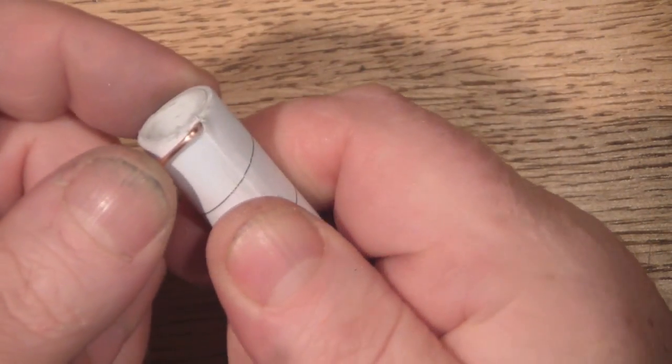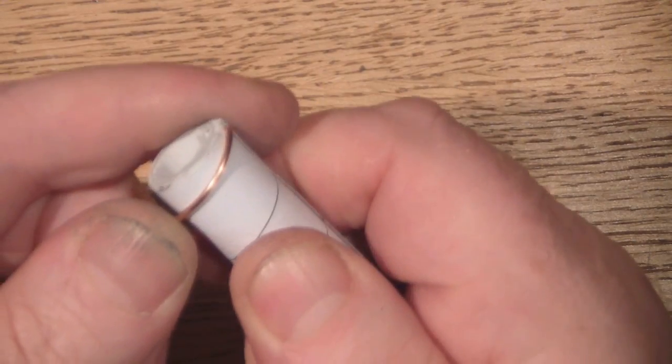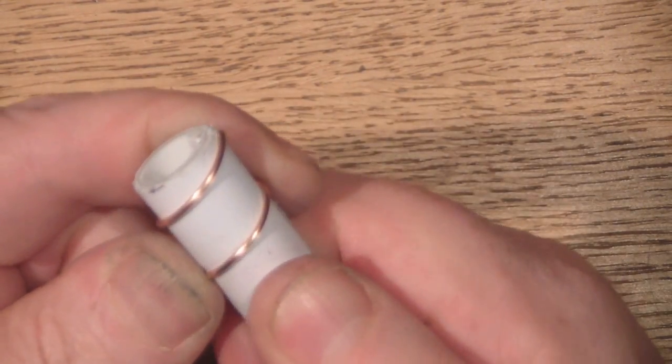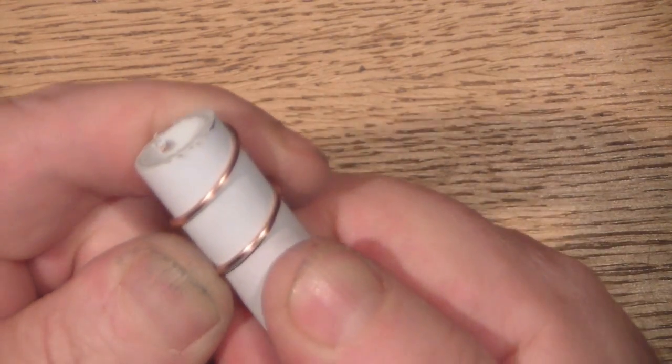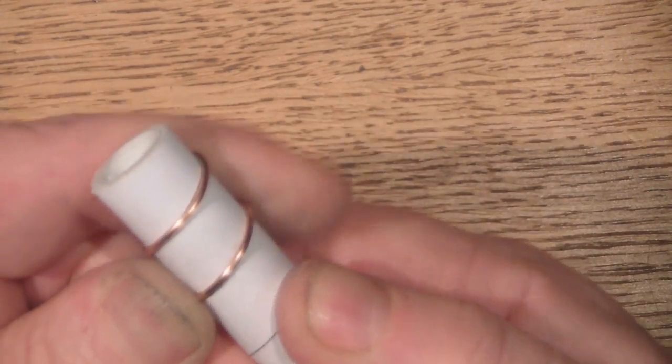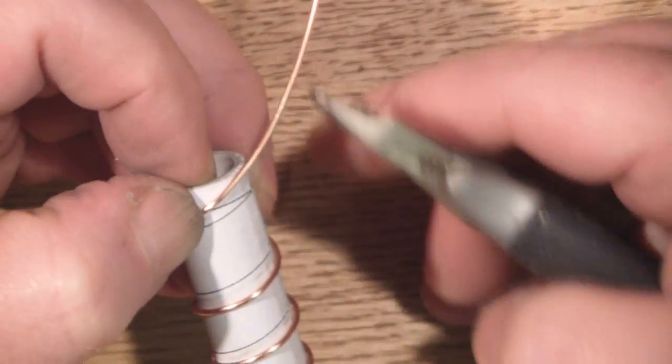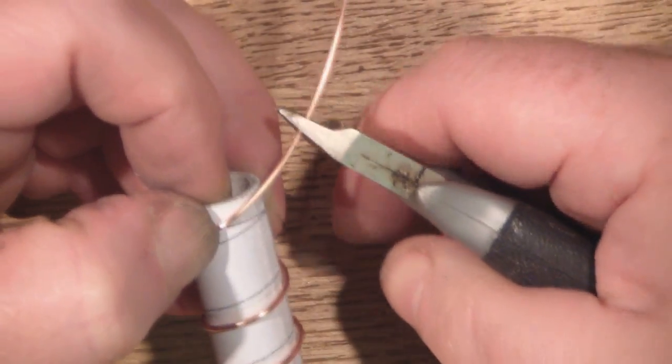So again just working it around. It's a lot smaller this one so it's a lot easier to control. Keeping it nice and tight, applying quite a little bit of pressure with my thumb to work the coils around. I'm going to cut it off about here so I've got plenty to play with.